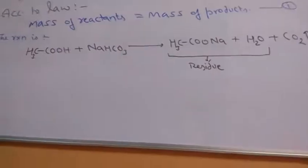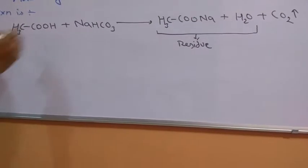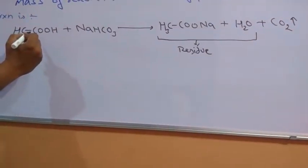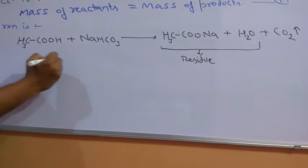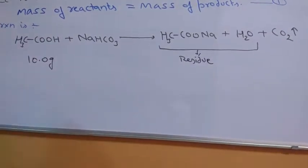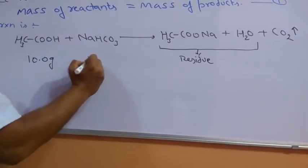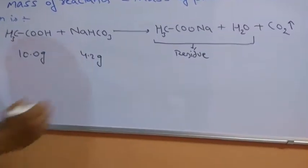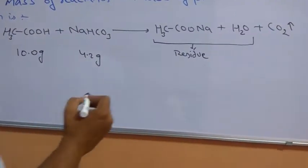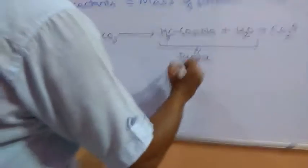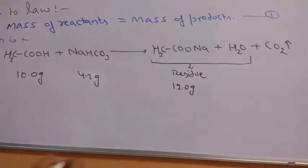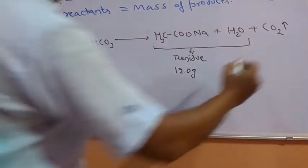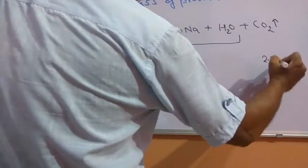Then you have to write their masses. CH3COOH has weight 10 gram. Baking soda has weight 4.2 gram. Residue is 12 gram. CO2 shows the weight of 2.2 gram.